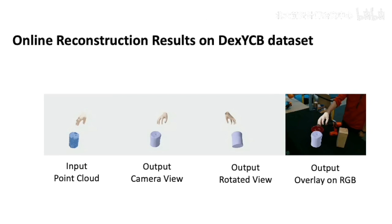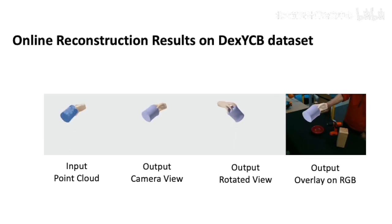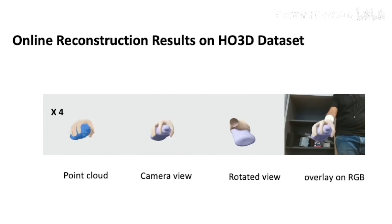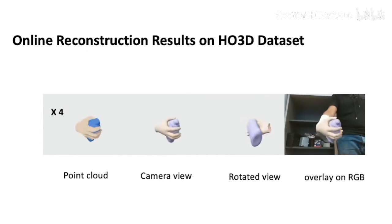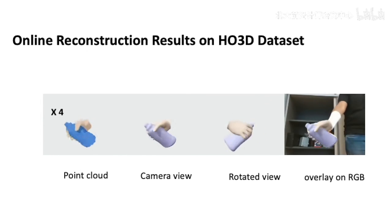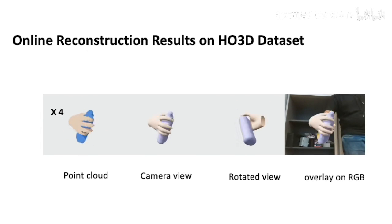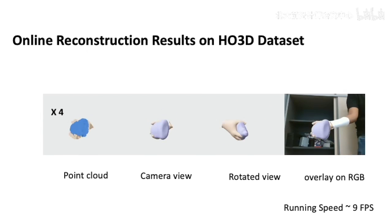Let's first look at our online reconstruction results on the unseen real dataset DEX-YCB. We show the input point cloud and the output reconstruction in the camera view and in a rotated view. We also overlay our output on the RGB image. On the HO3D dataset, we also show results with high-quality tracking and reconstruction. Our algorithm runs at 9 frames per second.